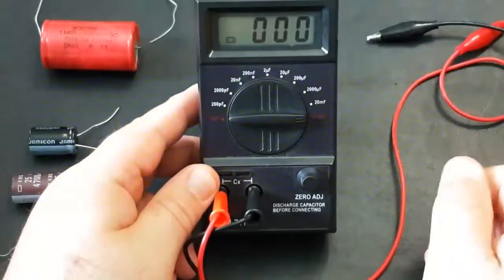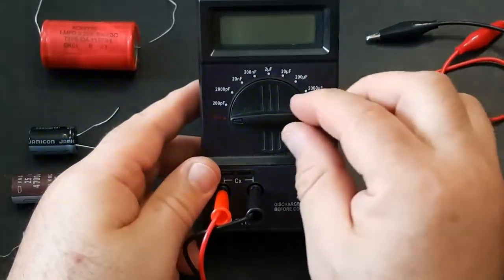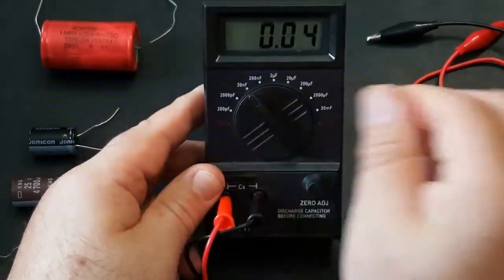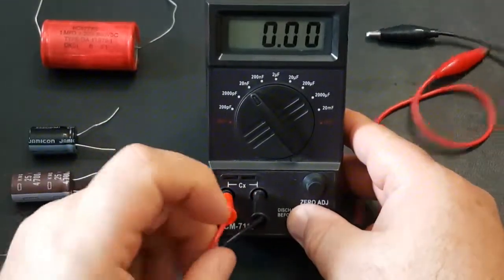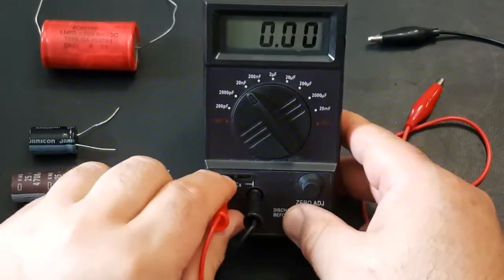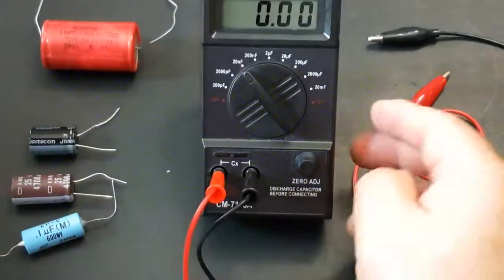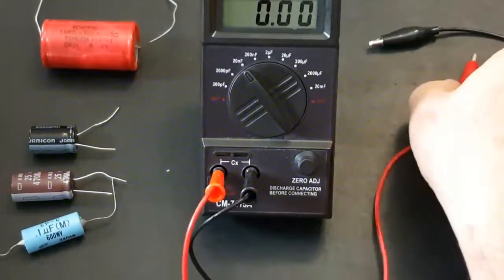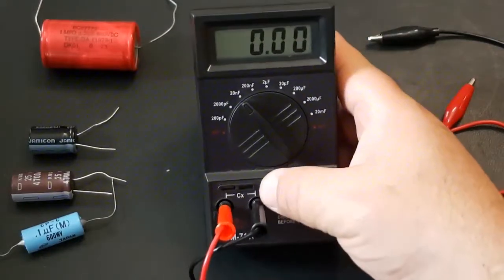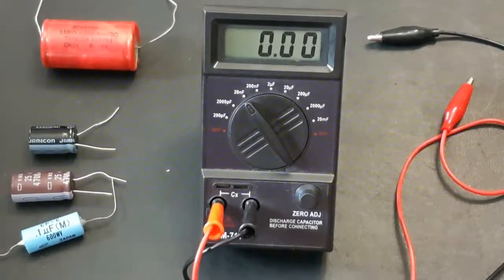It goes all the way from 200 pico to 20 megafarad. The off switch is both left and right. It has a little battery indicator. It will come on when your battery is getting low. As well as the probes, it also has the little crevices where you can stick your capacitor inside. I usually use the leads. I'm not a big fan of the little slots, but it's whatever works for you.